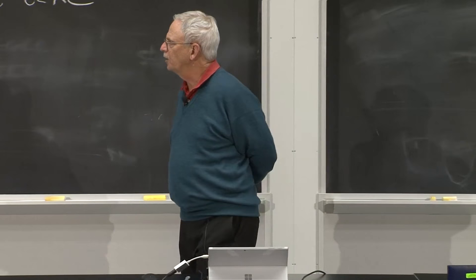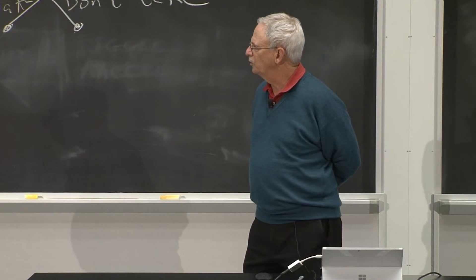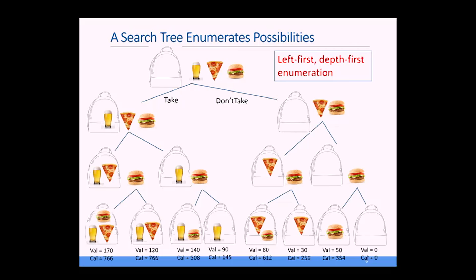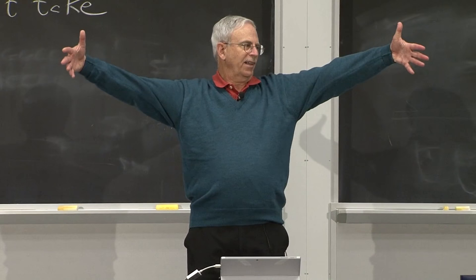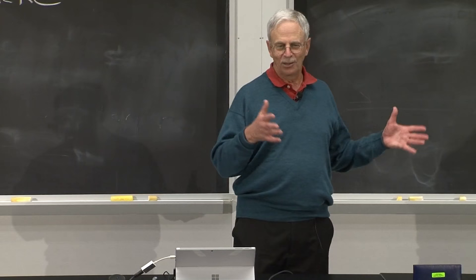I compute the value and the calories in each leaf, and if our constraint was 750 calories, I get to choose the winner — the pizza and the burger — the most value under 750. That's the straightforward algorithm. I don't know why we draw trees with the root at the top and the leaves at the bottom. My only conjecture is computer scientists don't spend enough time outdoors.